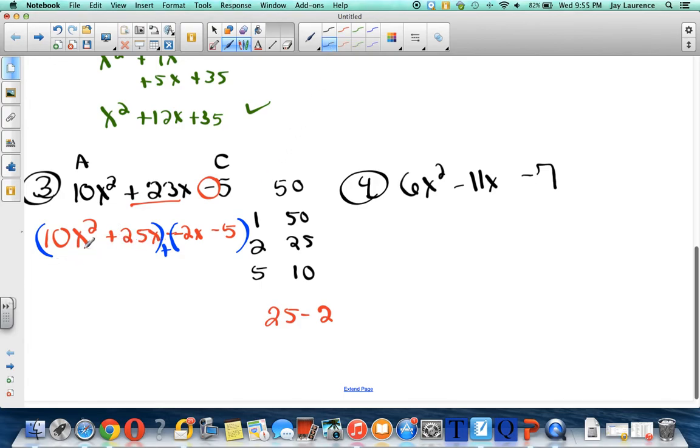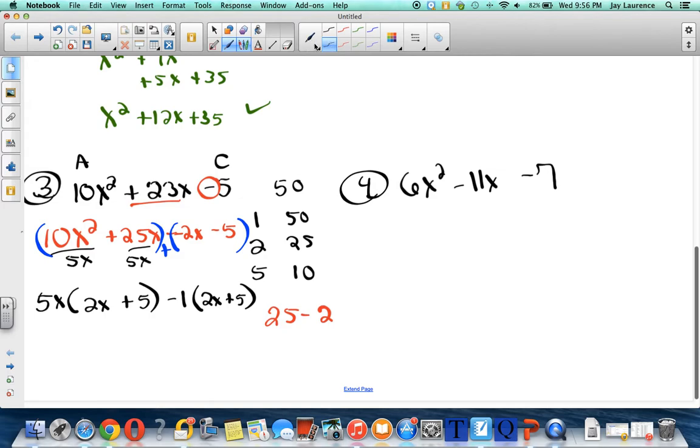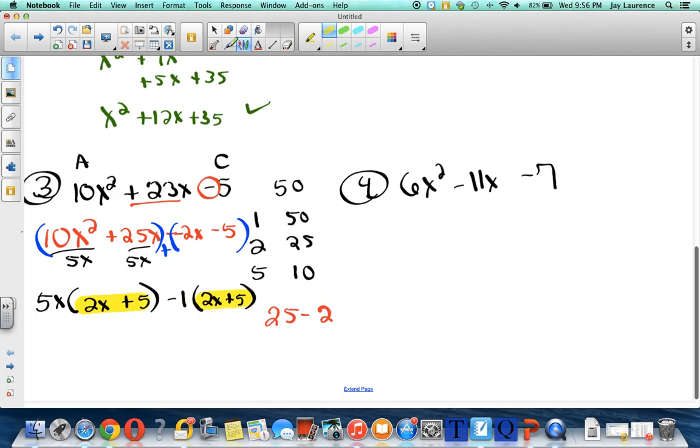So the GCF here I think is going to be 5x. So I'm going to get 5x times the quantity, I have to divide by 5x here, divide by 5x there, and I'll have 2x + 5. And then I'll factor out a negative 1. The only common factor I see is a negative, so I'm going to factor out a negative 1, and then I'll have 2x + 5. Oh look at that, I see a common factor. I do. I do. So I'm going to factor out the quantity of 2x + 5. What will be left? A 5x and a negative 1. And there you go. Pretty easy stuff.